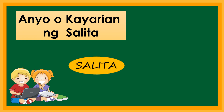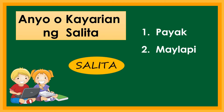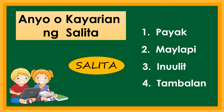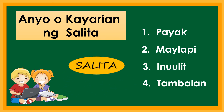Narito ang apat na anyo o kayarian ng salita. Una ay payak, may lapi, inuulit, at tambalan. Ang mga ito ay ginagamit upang makabuo ng salita. Ulitin mo nga ang apat na kayarian ng salita. Magaling!